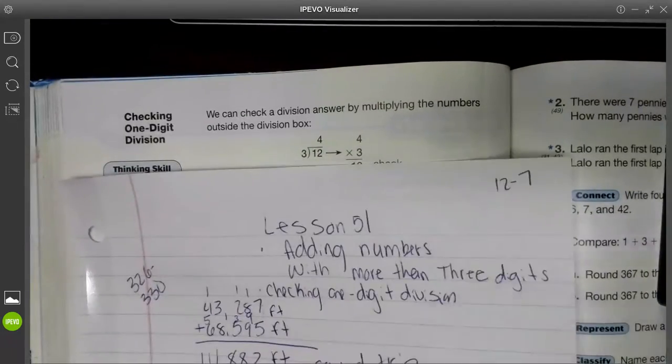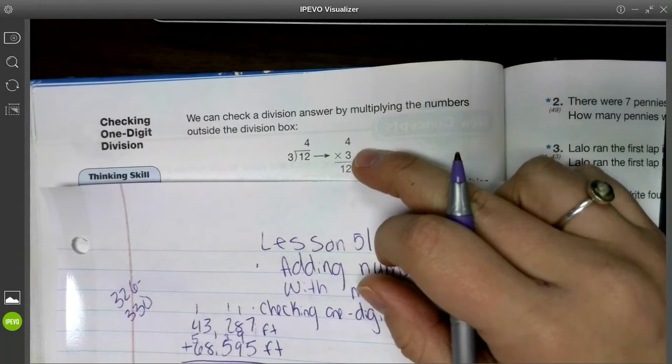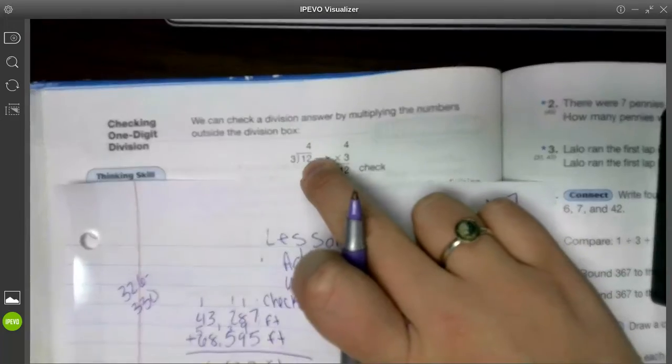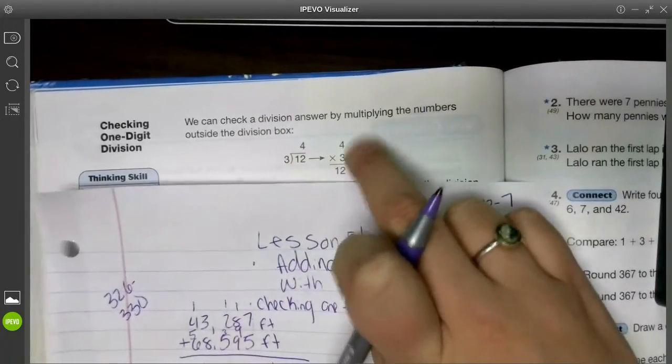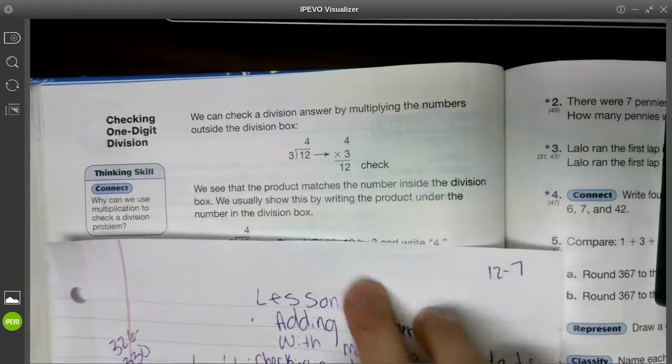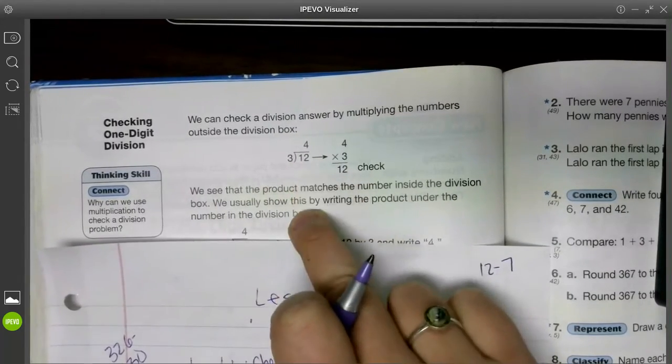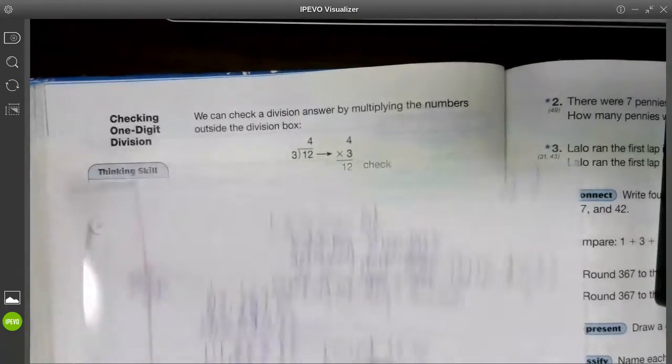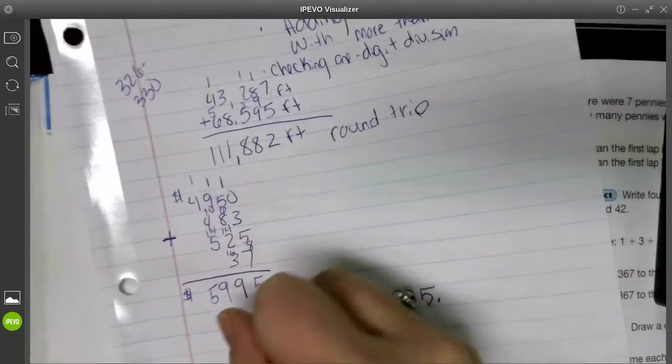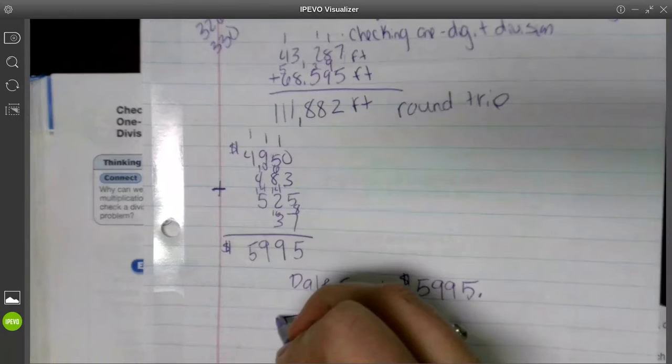Okay, so moving on. We can check a division answer, so second part of today's lesson, by multiplying the numbers outside of the division box. So we have 12 divided by 3, that equals 4. We multiply to check, so then we see the product. This is our product. It matches the number inside the division box. We usually show this by writing the product under the number in the division box. Okay, so we're going to copy this example. We're going to do a couple more.